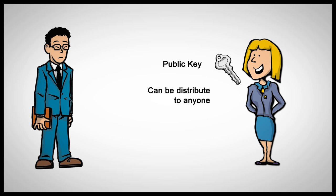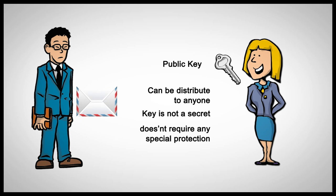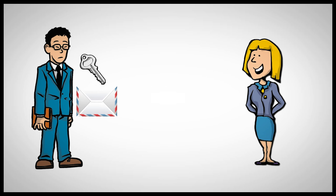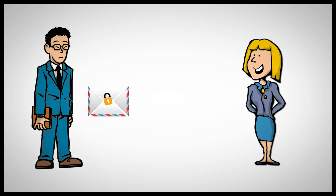It's public, which means it can be distributed to anyone who wants to send an encrypted message to Mary. It also means that the key is not a secret and therefore doesn't require any special protection. So Mary sends it to Bob. Then Bob uses the public key that Mary sent him to encrypt a message, and he sends the message back.